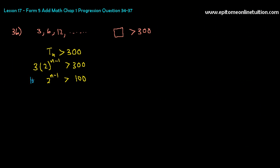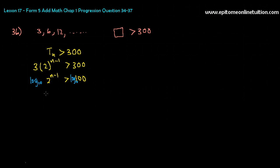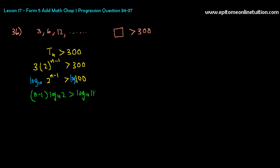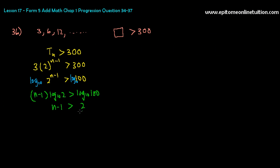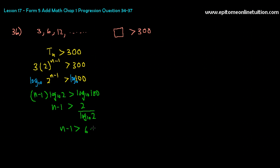Add a log 10 on both sides. Then you will have n minus 1 times log 10 of 2 is bigger than log 10 of 100. Log 10 of 100 is 2. So n minus 1 is bigger than 2 divided by log 10 of 2. Press your calculator — that's approximately 6.64. So n minus 1 is bigger than 6.64.